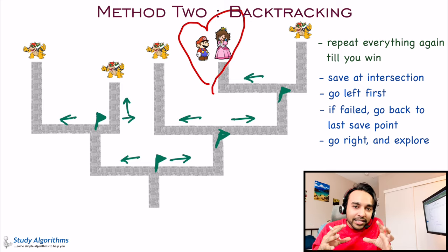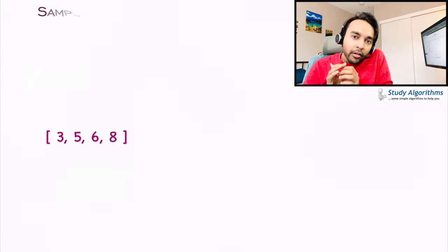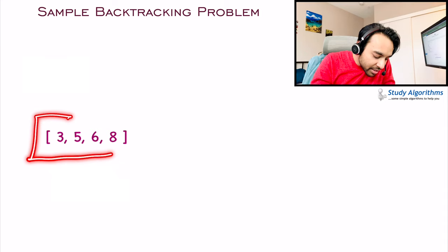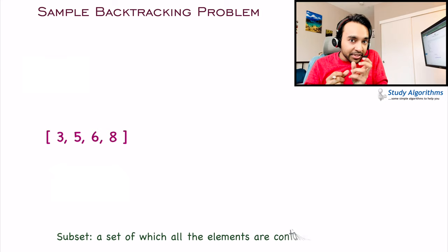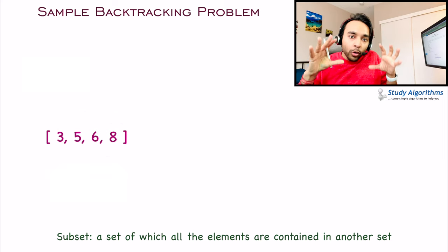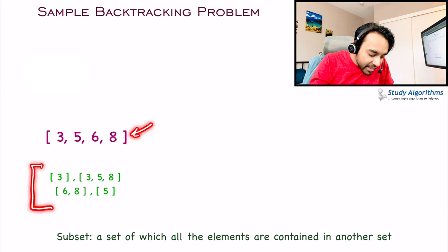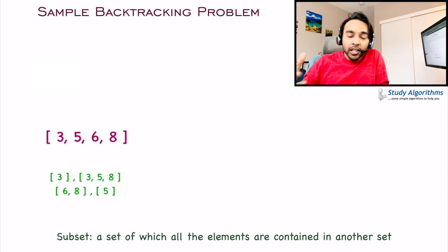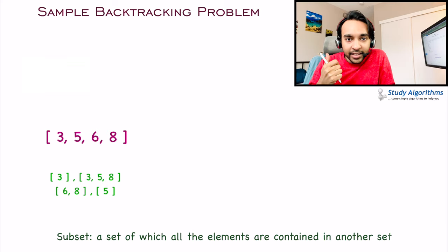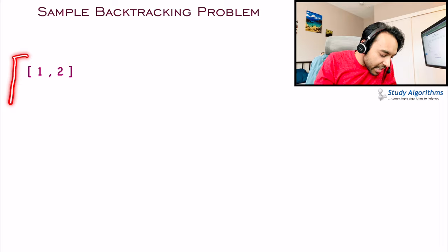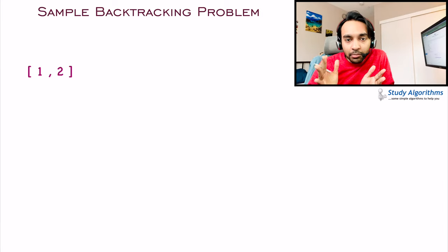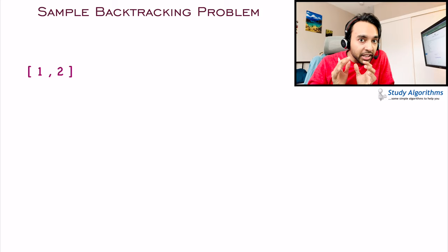Based upon this approach, you can start to solve some programming problems. One of the very popular programming problems based on backtracking is finding all the subsets of a given array. A subset is any smaller set that can be formed using any of the elements from the original set. There will be many subsets. So how does backtracking work in that context? To take a simple example, let us take an array that has just two elements. Tell me all the possible subsets of this array using the backtracking approach.